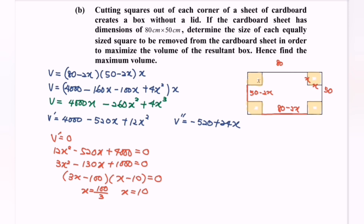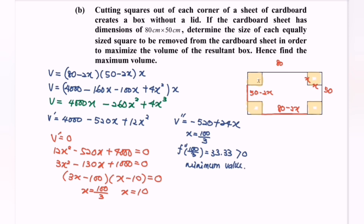Step 4: test using the second derivative. If x equals 100/3, then V double prime of 100/3 equals approximately 33.33, which is greater than 0 — so it is a minimum value at x equals 100/3. If x equals 10, then V double prime of 10 equals negative 280, which is less than 0 — so it is a maximum value at x equals 10.